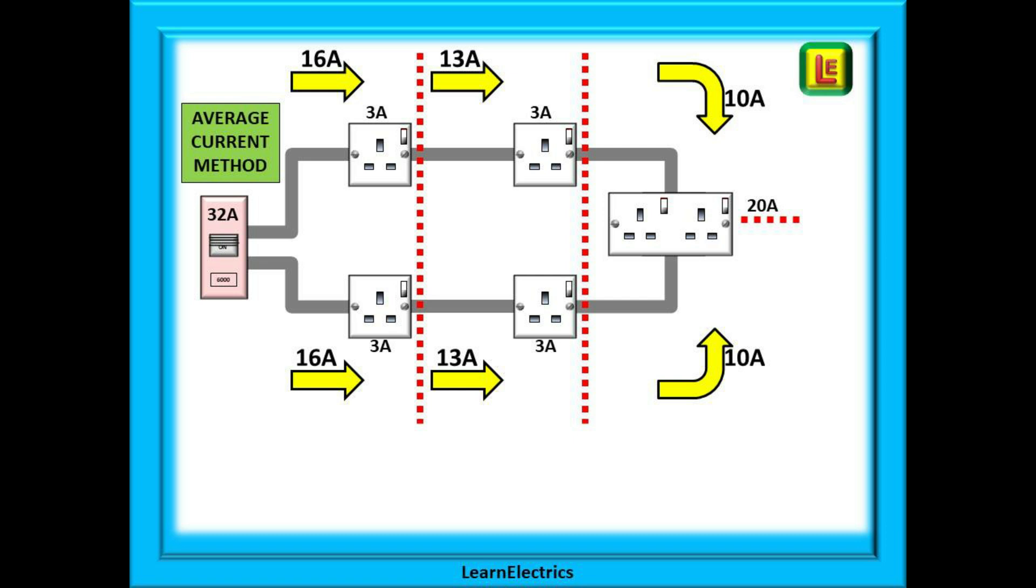If we look at this on the circuit drawing we can see that the first section of the upper leg from the breaker will carry 16 amps of current, and so will the first section of the lower leg, another 16 amps. At the first socket on each leg, 3 amps will be tapped off. This leaves 13 amps for the second section where another 3 amps is used.